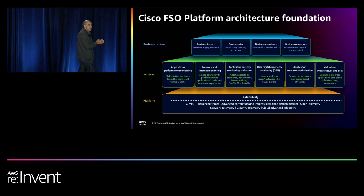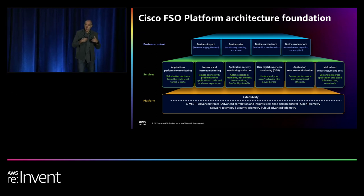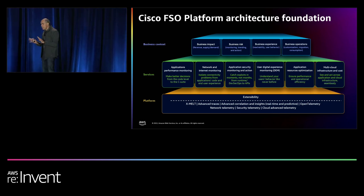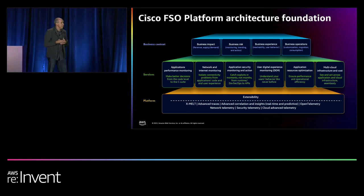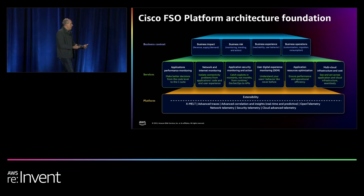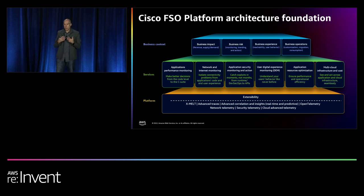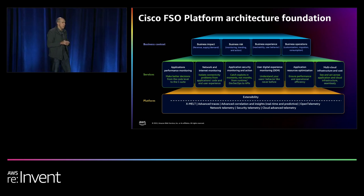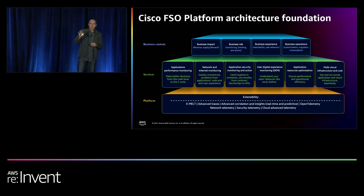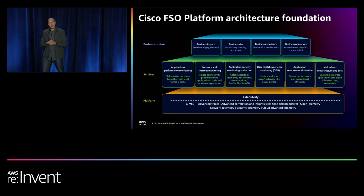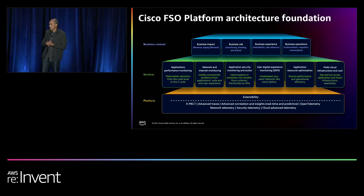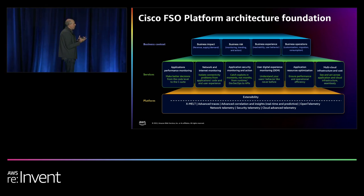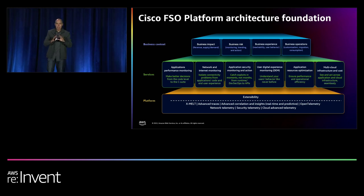Cisco knows a thing or two about networking and security. So ingesting advanced telemetry — including across global backbones — together with AWS to ingest advanced cloud telemetry, we can do correlation, anomaly detection, and provide insights that are real-time but also predictive. We have AI and machine learning models that predict where you're going. We spent the last two years modeling the entire internet, so you can predict traffic and what your users will experience. All of this is anchored on OpenTelemetry to provide services that today exist as single product categories like APM.